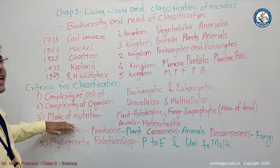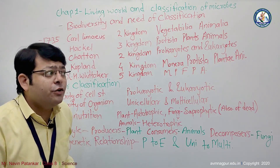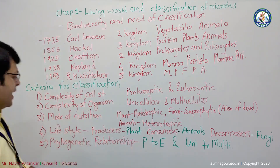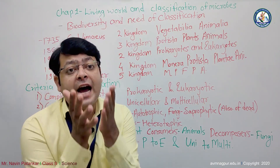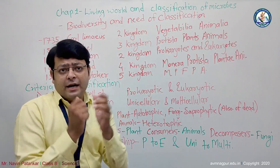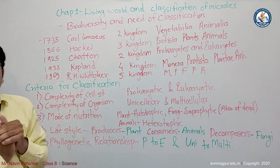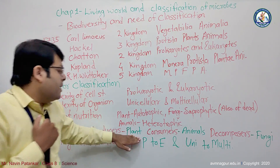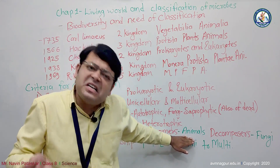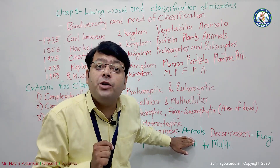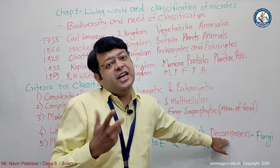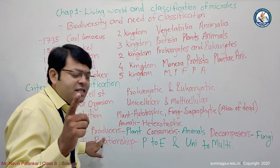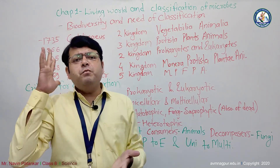The fourth criteria is lifestyle. Plants are producers. Animals are consumers — we do not produce our own food. Fungi are decomposers — they break down dead and decaying matter. So plants are producers, animals are consumers, and fungi are decomposers.